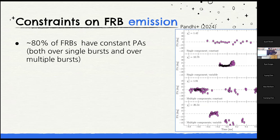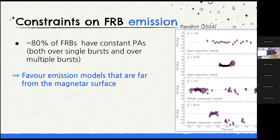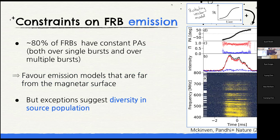First, what can we learn about emission mechanisms from our data? Looking at polarization angle as a function of time for many FRBs, roughly 80% have constant polarization angle profiles as a function of time, which favors emission models farther from the magnetar surface — something like a shock model. But there are already exceptions: one CHIME FRB has a polarization profile that almost exactly resembles a rotating vector model, suggesting emission very close to the magnetar surface. So we're already seeing diversity in the types of emission physics that can create FRBs.